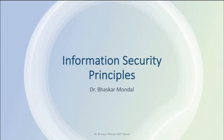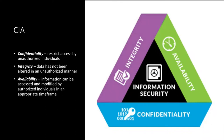The principles of information security define what security means and what its core pillars are. The basic principles are given by CIA: confidentiality, integrity, and availability. These three are the main pillars of information security, and this principle was decided by NIST.